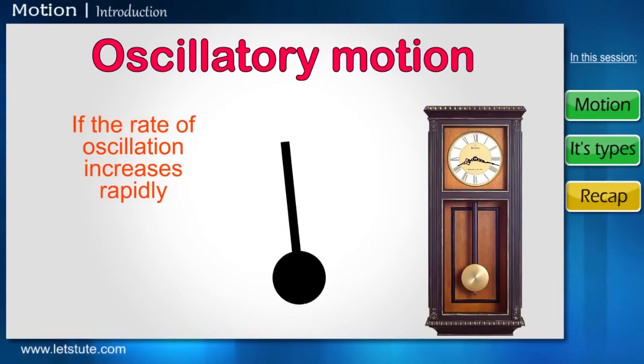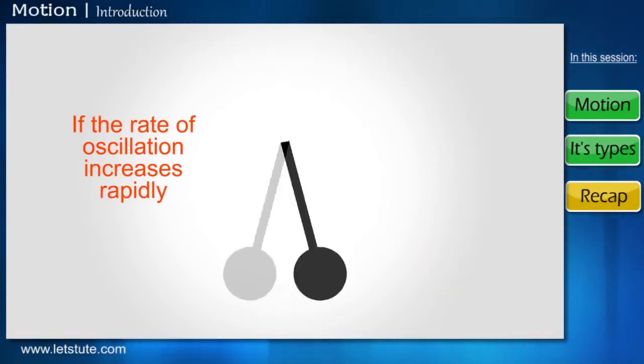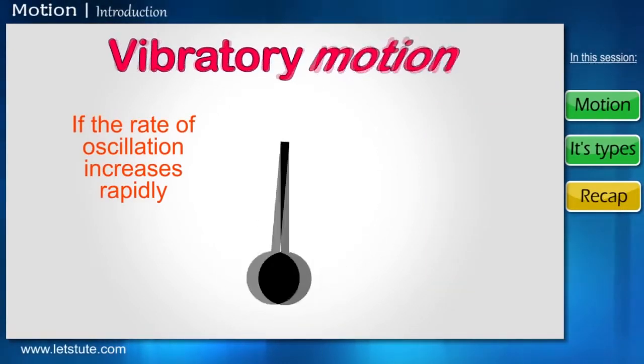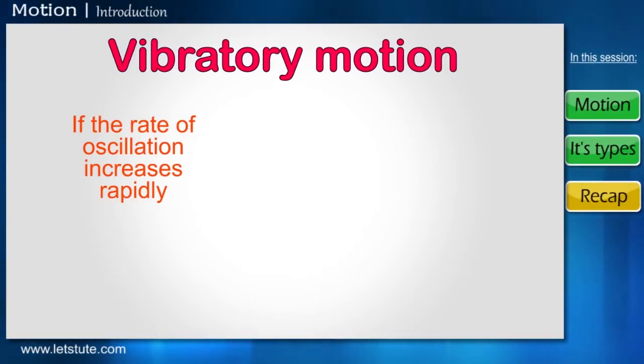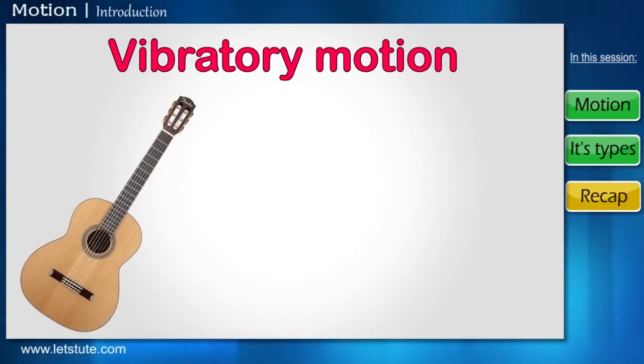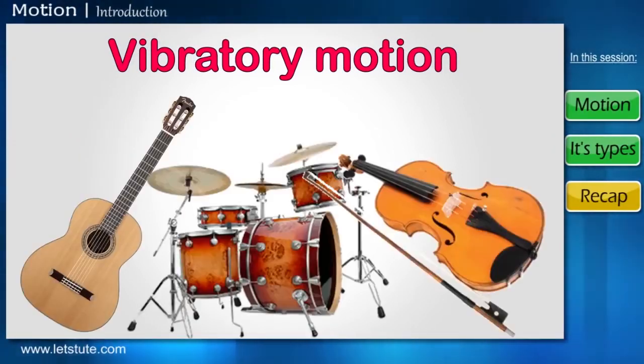If the rate of oscillation increases rapidly, then this motion now becomes vibratory motion. Examples of vibratory motion are musical instruments, such as the guitar, violin, drums, etc.